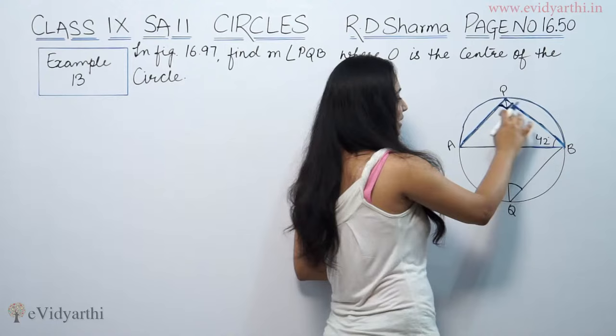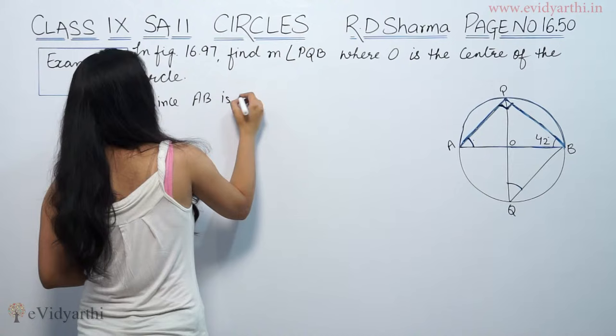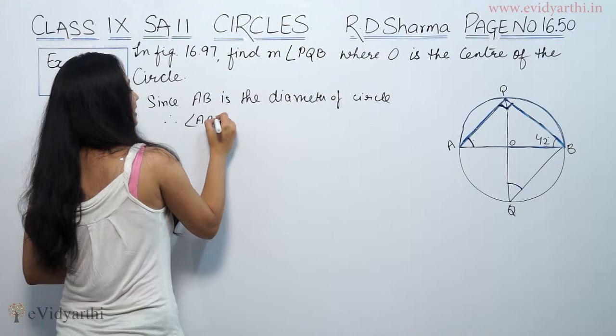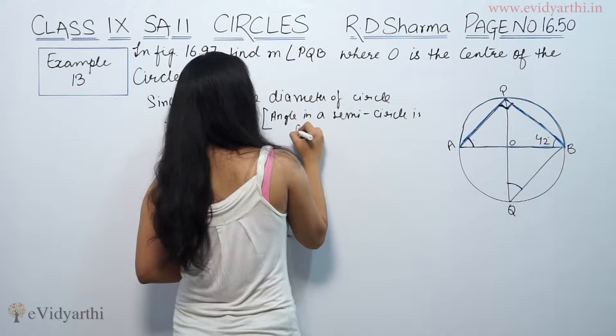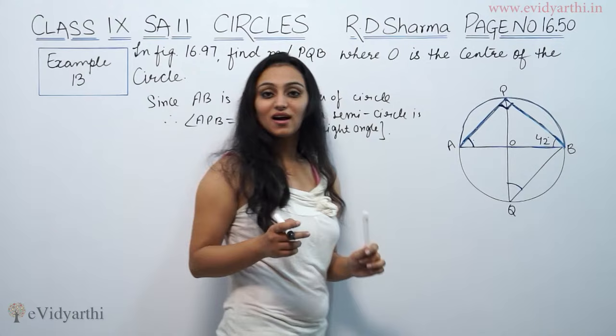With this we can find angle APB. Since AB is the diameter of the circle, angle APB is equal to 90 degrees, by the theorem: angle in a semicircle is a right angle. Now, since we have this 90 degree angle, we will work with the triangle above the circle.